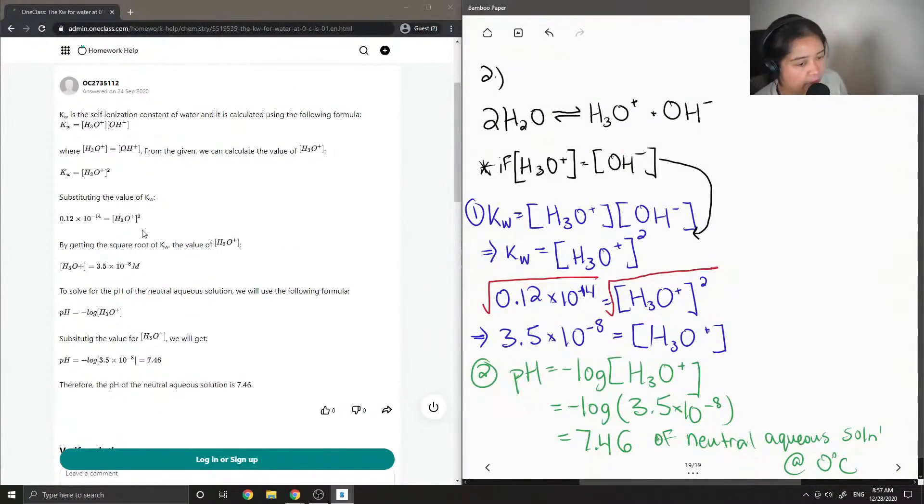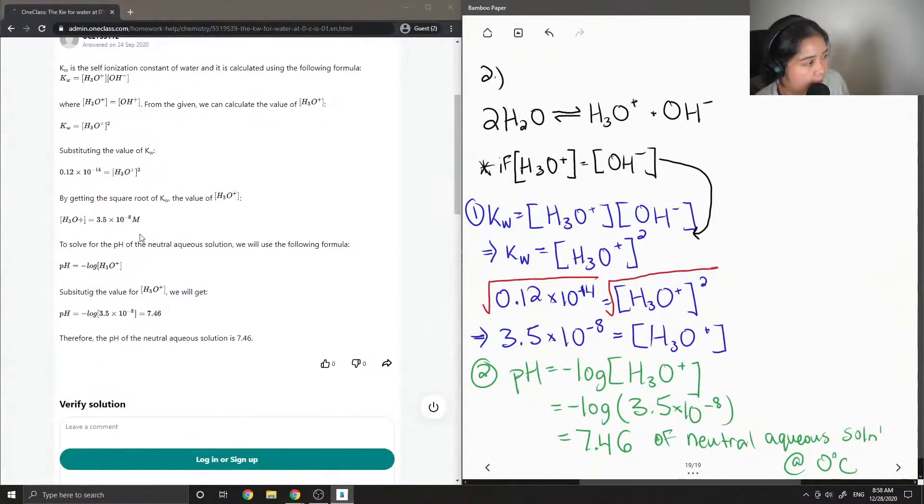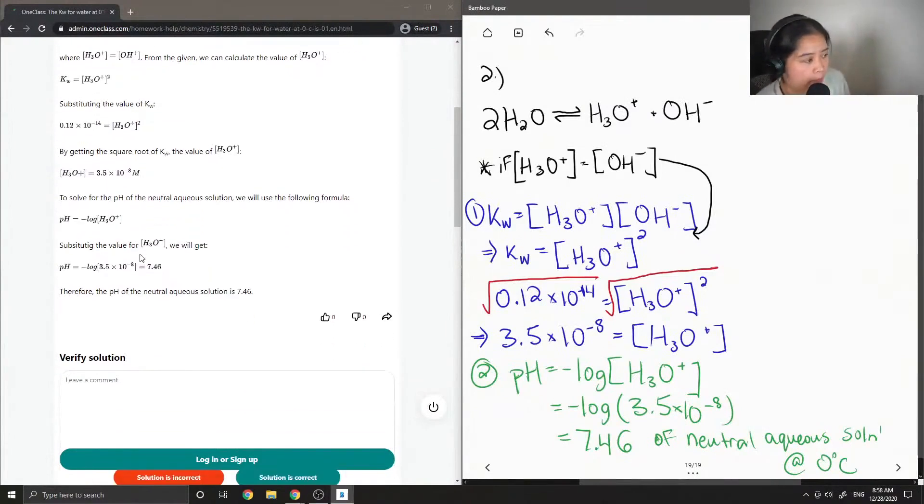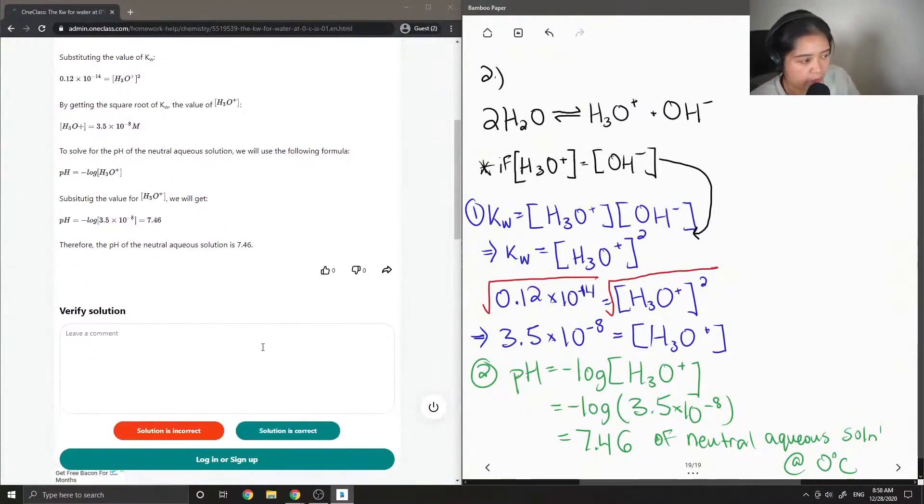The concentration of H3O plus is equal to H3O plus squared, they square rooted both sides to get 3.5 times 10 to the negative 8 moles per liter for the concentration of H3O plus, then they plugged it into the pH equation and also got 7.46.